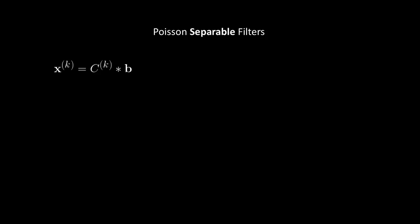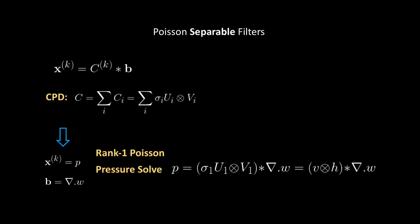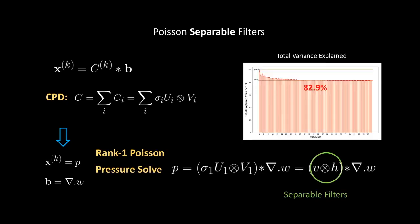Back to our equation, we perform CPD, plug-in pressure and divergence, and we get our rank one Poisson pressure equation with the vertical and horizontal convolutional filters. If you look at the total variance explained by our filters, they plateau pretty much on about 83% as the iteration goes to infinity, which is quite sufficient as you will see in the results.